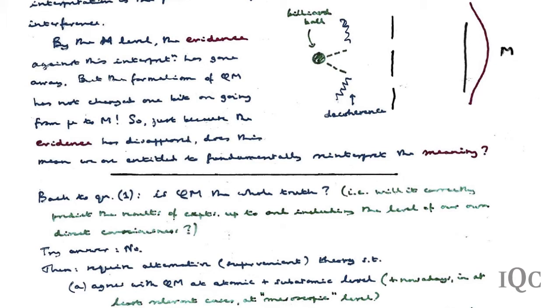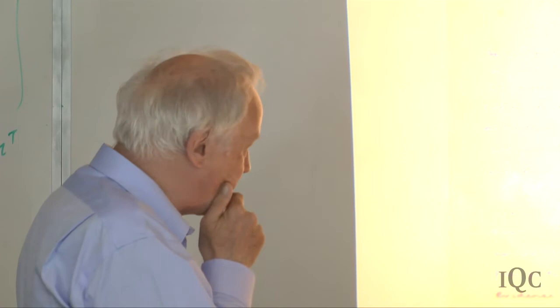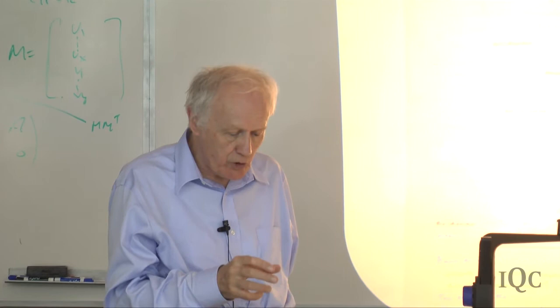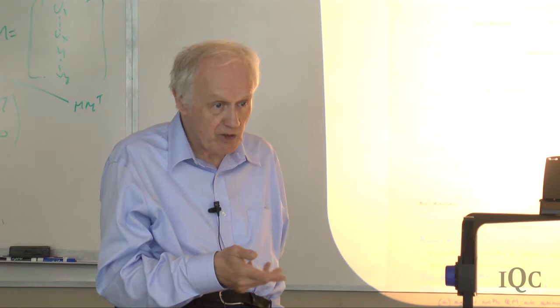Just because the evidence has disappeared, are we entitled to fundamentally reinterpret the meaning of the formalism? That would be a gross logical non sequitur. It is like arguing that in a murder trial, if a vital piece of evidence mysteriously disappears, the accused has suddenly become innocent. Similarly, the disappearance of evidence for quantum superposition at the macroscopic level does not justify reinterpreting the meaning of the formalism.